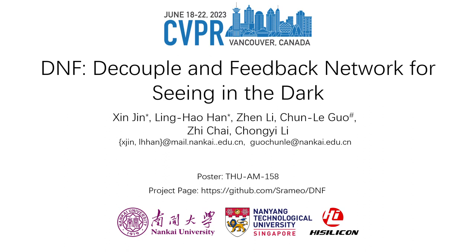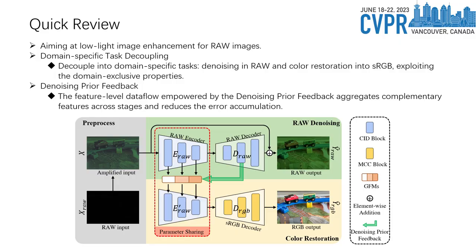Hello everyone. In this work we target the challenge of low-light image enhancement for raw images and propose a generalized pipeline to fully exploit the potential of raw images. The DNF framework decouples the whole task into two domain-specific tasks: denoising in the raw domain and color restoration in the sRGB domain, thus enabling exploitation of the unique properties exclusive to each domain.